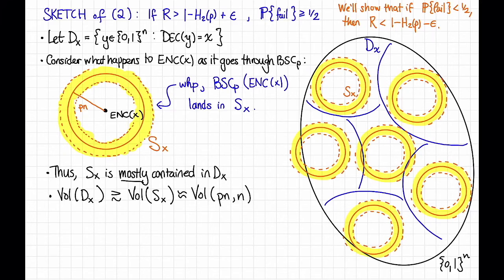But we already know that this is approximately, more squiggly squigglies, equal to 2^(n·H(p)). And once again, to make all of these squiggly squigglies precise, it matters how wide this annulus is, which is something that we would pick depending on epsilon. So given that, up to some constant factor that may depend on epsilon, the volume of D_x is at least 2^(n·H(p)).